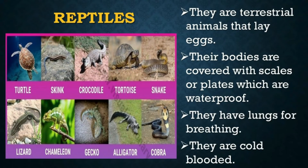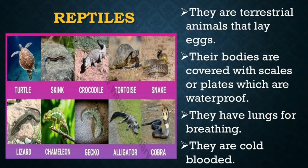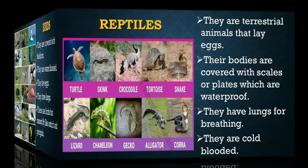Reptiles are terrestrial animals that lay eggs. Their bodies are covered with scales or plates which are waterproof. Reptiles have lungs for breathing. Their body temperature can match that of their surroundings and are therefore cold-blooded animals. Examples of reptiles are crocodile, alligator, sea turtle, monitor lizard, and snakes.